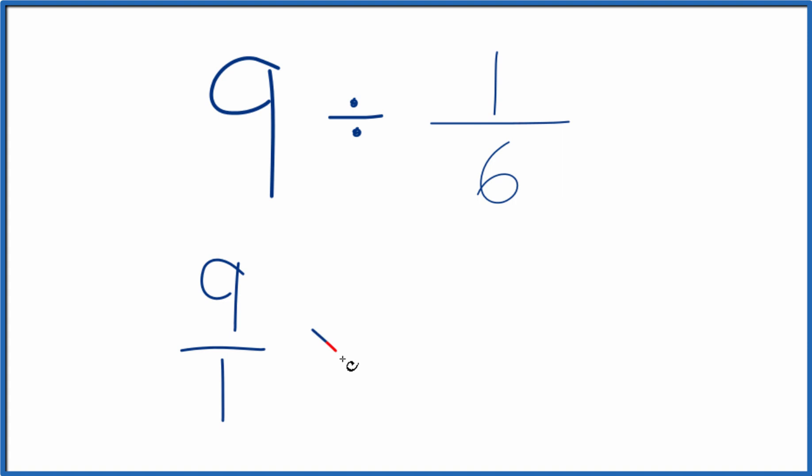And instead of division, let's multiply by the reciprocal of 1/6. To take the reciprocal of a number, you move the numerator to the bottom and the denominator to the top. So we have 6 over 1.